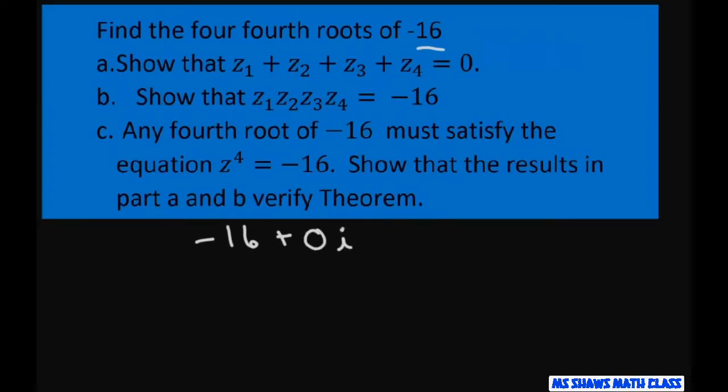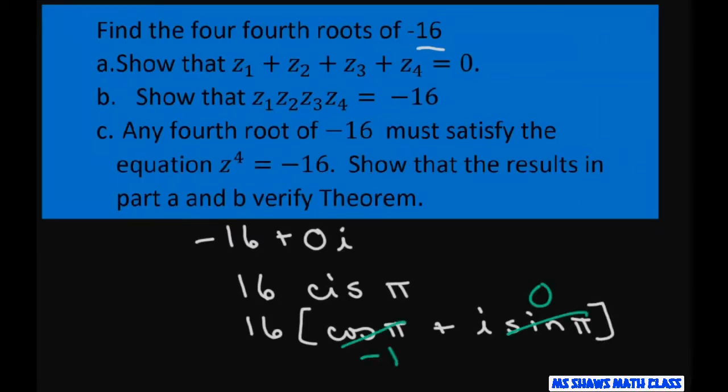And I'm going to graph it in just a minute, but this can be expressed in polar form as 16 cis π. Because this would be 16 times cosine of π plus i sine of π. And sine of π is just 0. Cosine of π is negative 1. So that gives you your negative 16.